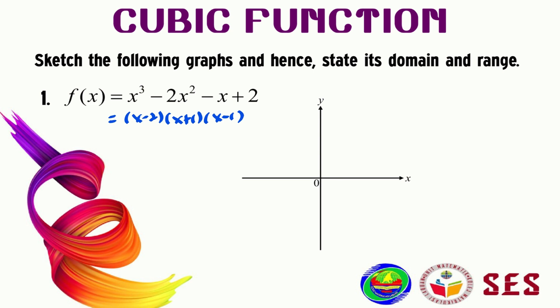The 'd' value, which is 2, is the y-intercept. The x-intercepts are at x = -1, x = 1, and x = 2, and the y-intercept is at positive 2, somewhere around here. Since the coefficient of x³ is positive one, the graph starts from sad to smile.